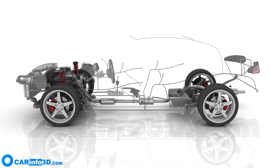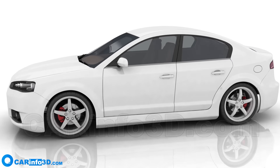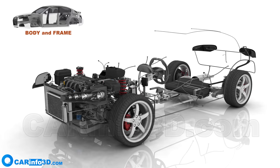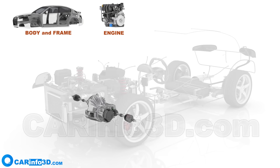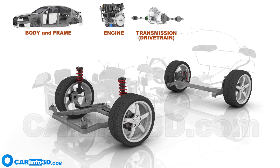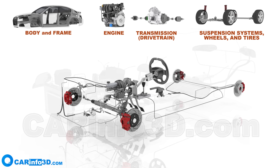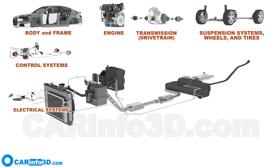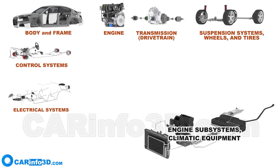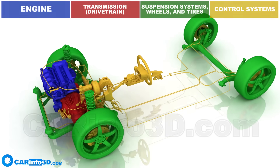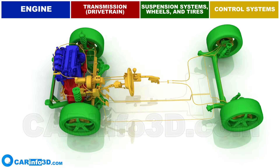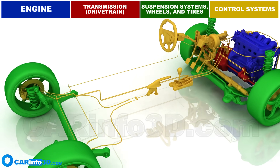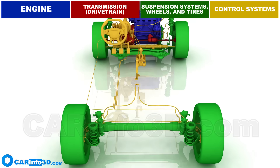In this video, we will go over the anatomy of a car. The following major systems are included in the vehicle: the body and frame, the engine, the transmission, suspension systems, wheels and tires, control systems, electrical systems, engine subsystems, and climatic equipment. Let's take a look at the car's major components and assemblies. It may appear complicated now, but we're going to explore each system in greater detail. So, let's look at car assemblies.